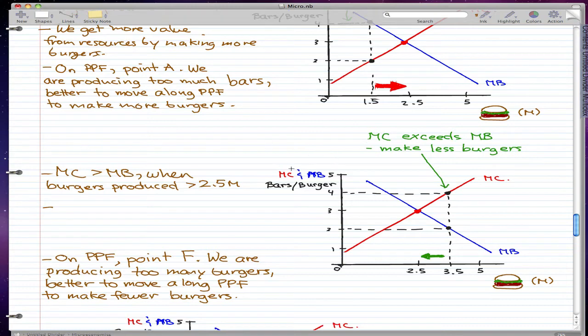The cost of making one more burger exceeds the benefit that we get from that one additional burger. So marginal cost exceeds marginal benefit, so we make less burgers. When burgers produced is greater than 2.5 million, marginal cost exceeds marginal benefit.